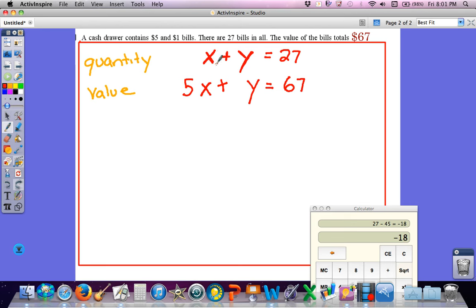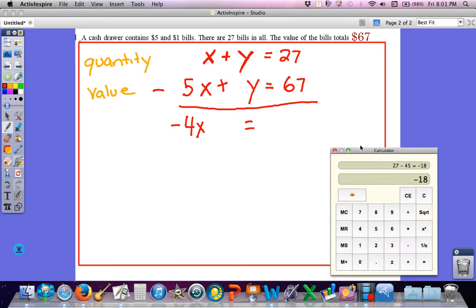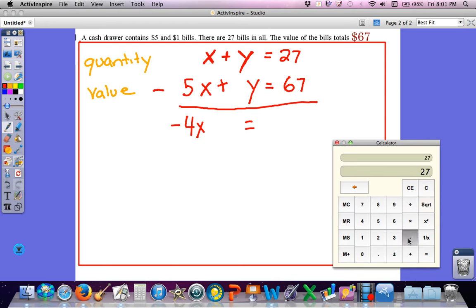You can use a few different methods. On this one, I'm going to go ahead and do elimination. Because I notice that if I subtracted these two, Y minus Y would give me 0. So I'm going to subtract X minus 5X is going to give me negative 4X, and Y minus Y is going to give me 0. And 27 minus 67 is going to give me negative 40.